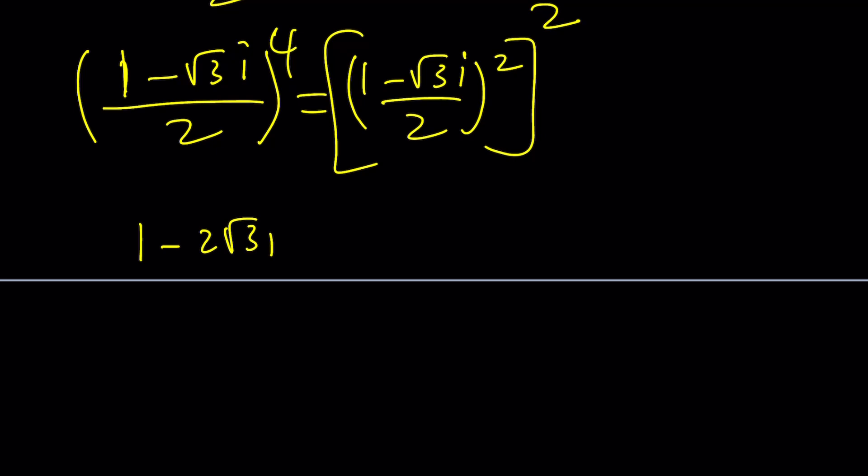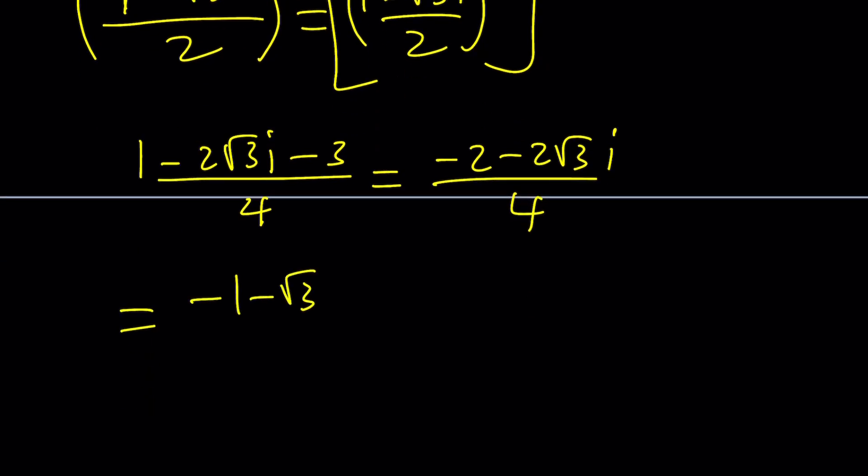If you square this you're going to get what? 1 minus 2 root 3i minus 3 divided by 4. That is negative 2 minus 2 root 3i over 4. I kind of simplified it and that is negative 1 minus root 3i. Actually no that's not right because we had to divide by 4. So this is still 4 and then if I simplify it it's going to be negative 1 minus root 3i over 2. Yeah I shouldn't lose the 2 at the bottom.